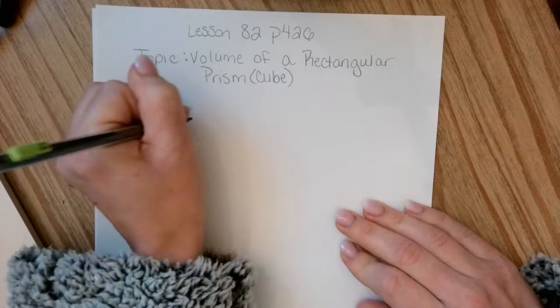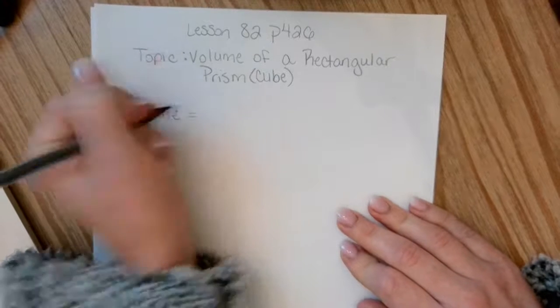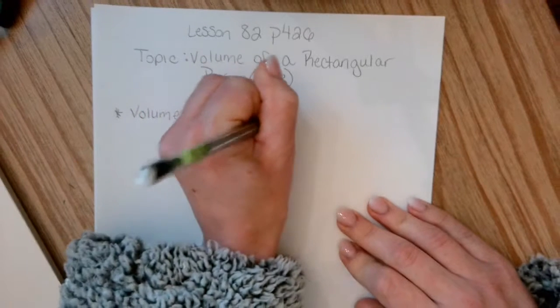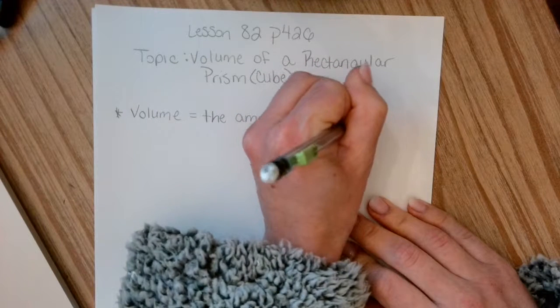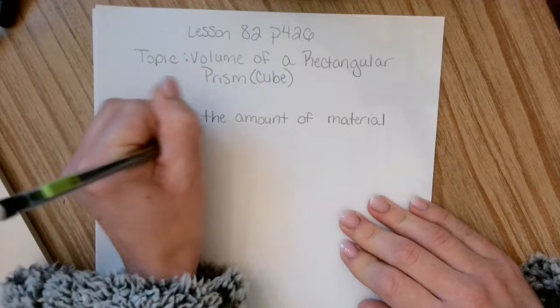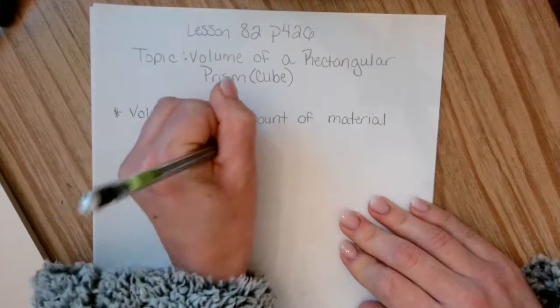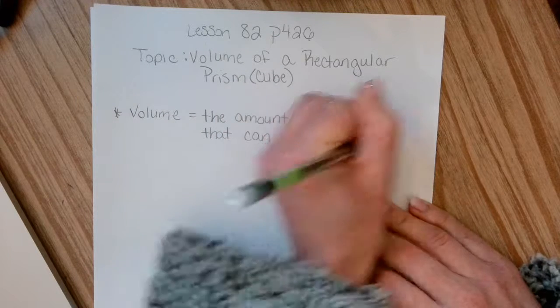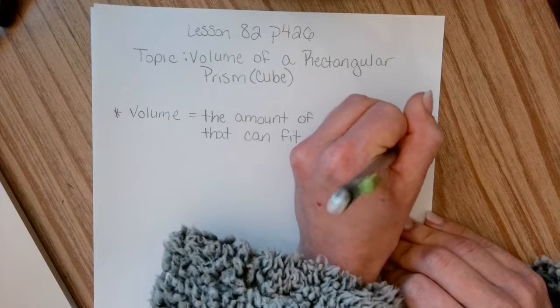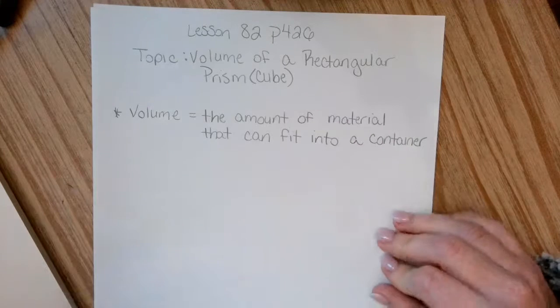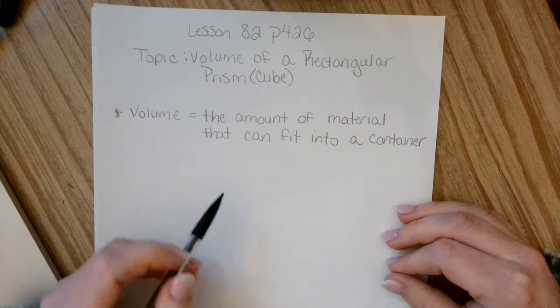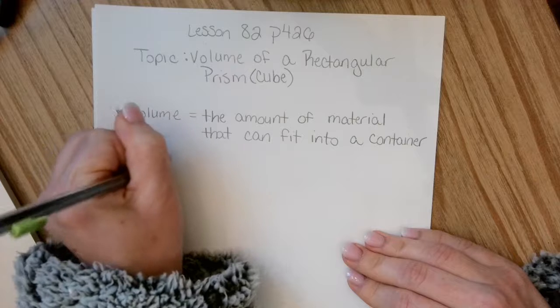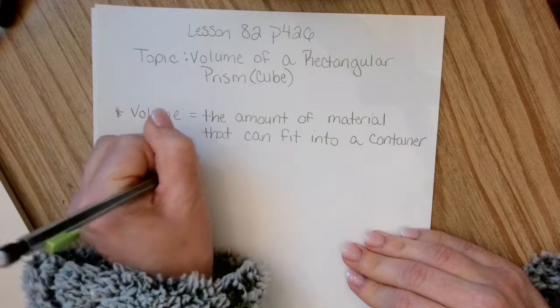So volume is the amount of material that can fit into a container. So just like the water bottle example, the water itself would be the material and the container would be the bottle.